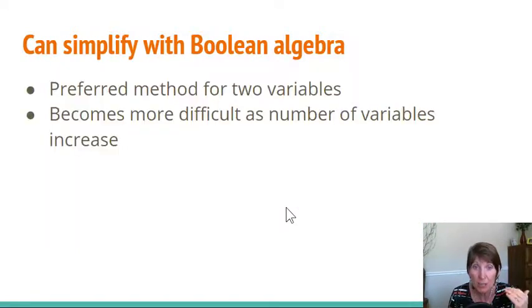Now, this works pretty straightforward when we have two variables, right? And in fact, simplifying with Boolean algebra is the preferred method for two variables. That's pretty straightforward. We know how to do that, and we really get a simple version. It becomes more difficult as the number of variables increase. And so as we transition from two variables to three, then we move to using Karnaugh maps as a way to simplify expressions.